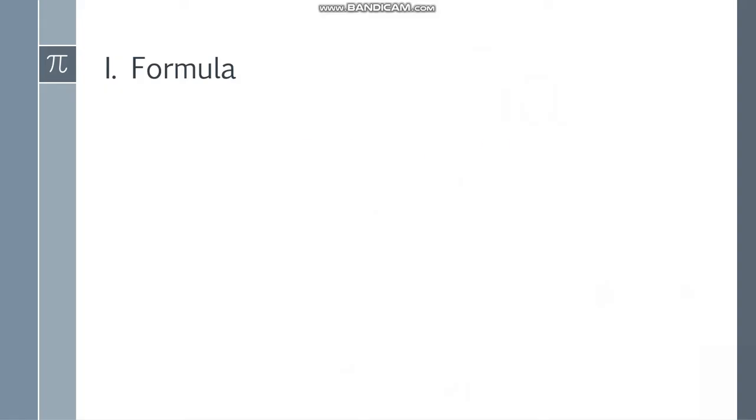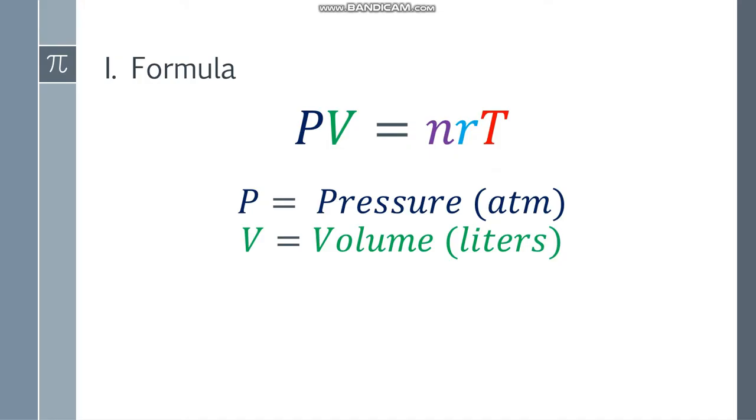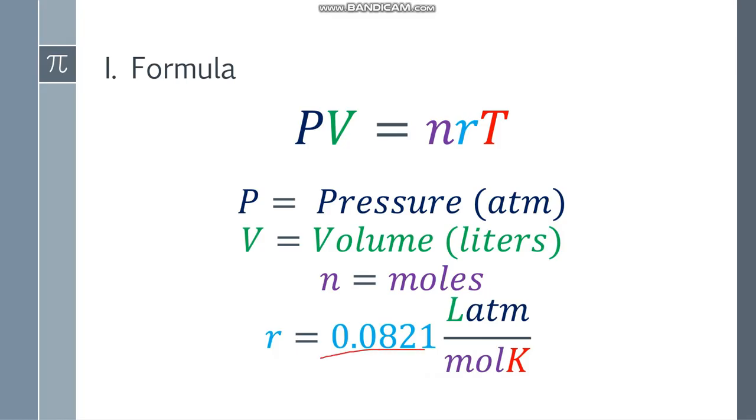Let's start with the formula. The formula we use here is PV is equal to nRT. The P stands for pressure, always in atmospheres. If you want to solve it, convert to atmospheres. V is volume in liters. If you have milliliters, you need to convert to liters. The N will represent the number of moles.